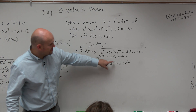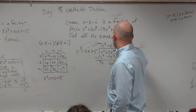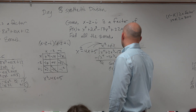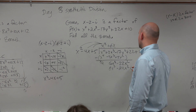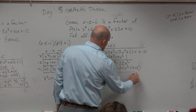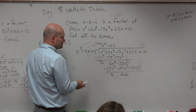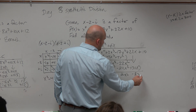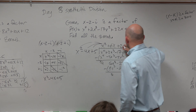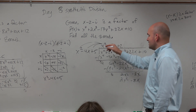Then you start everything all over again. x squared goes into 6x cubed, 6x times. 6x times x squared is 6x cubed. 6x times negative 4 is negative 24x squared. And 6x times 5 is positive 30x. Subtract the rows — that goes to zero, this goes to 2x squared. Then bring that down — that gives a negative 8x. Do this all over again: x squared goes into 2x squared, positive 2 times. 2 times x squared is 2x squared. 2 times negative 4x is negative 8x. 2 times 5 is positive 10.